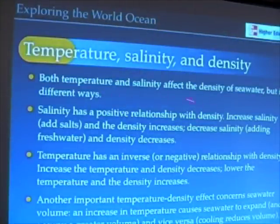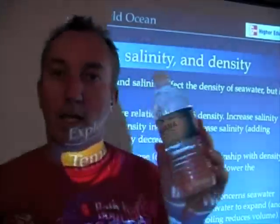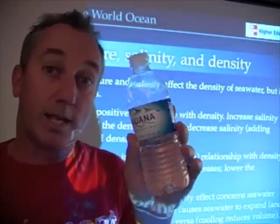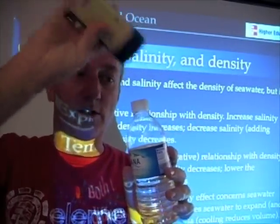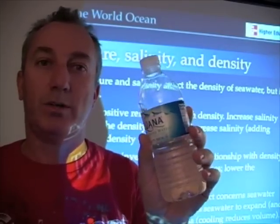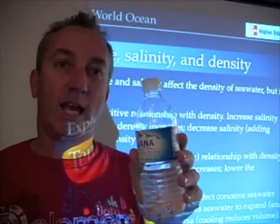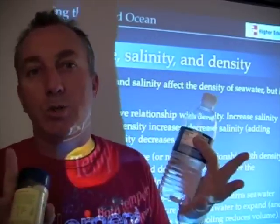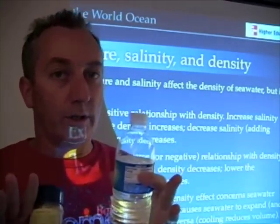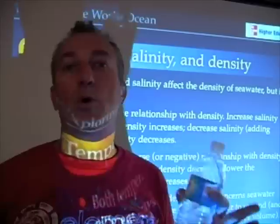Both temperature and salinity affect the density of seawater, but in different ways. It's probably easier to think about how salinity affects seawater density. If you have water and add salt that dissolves, you now have more matter in the bottle, so its density has gone up. It's become saltier and its density has increased. It should make sense that saltwater is more dense than fresh water, and the saltier the water, the more dense it becomes.